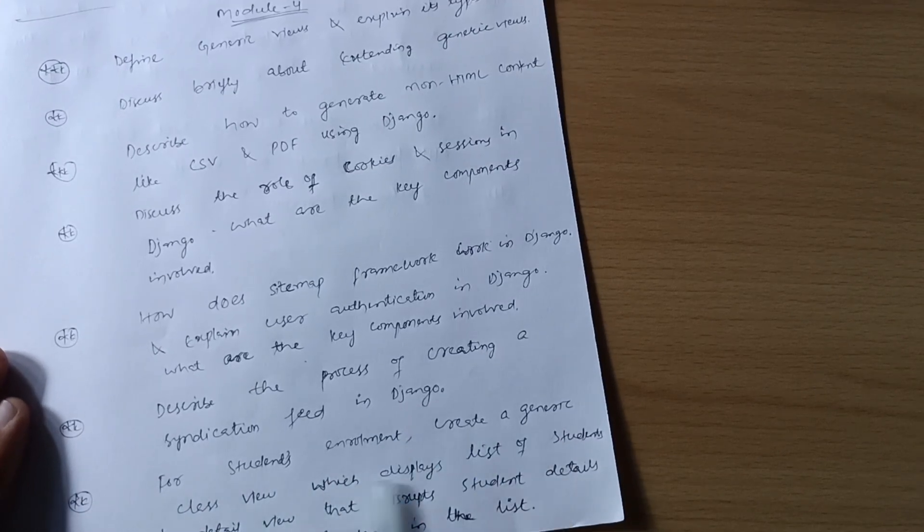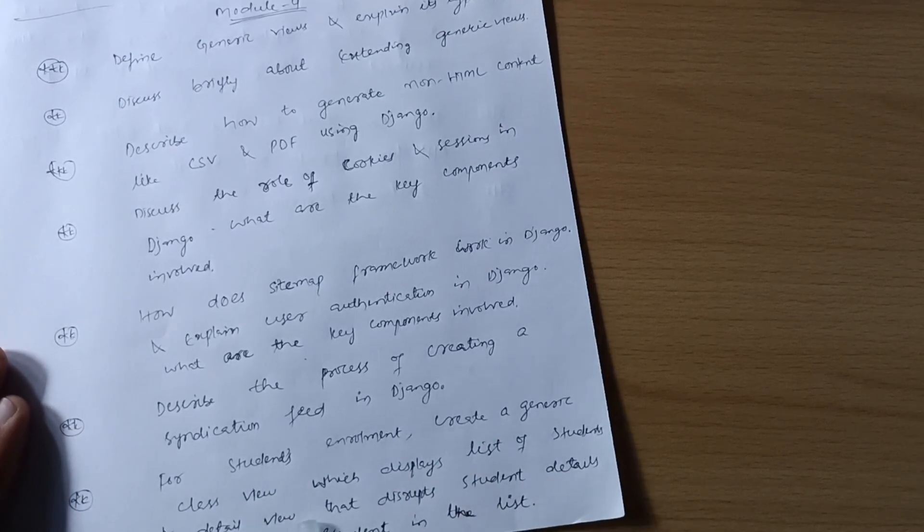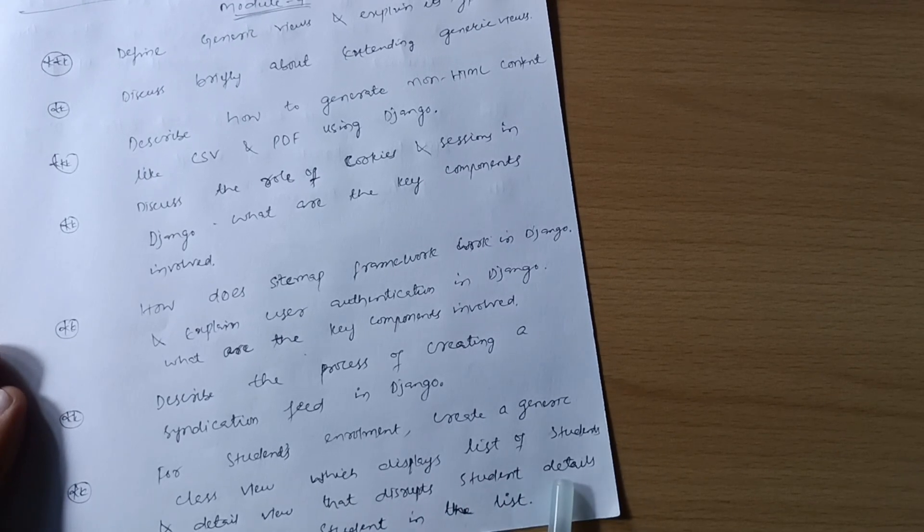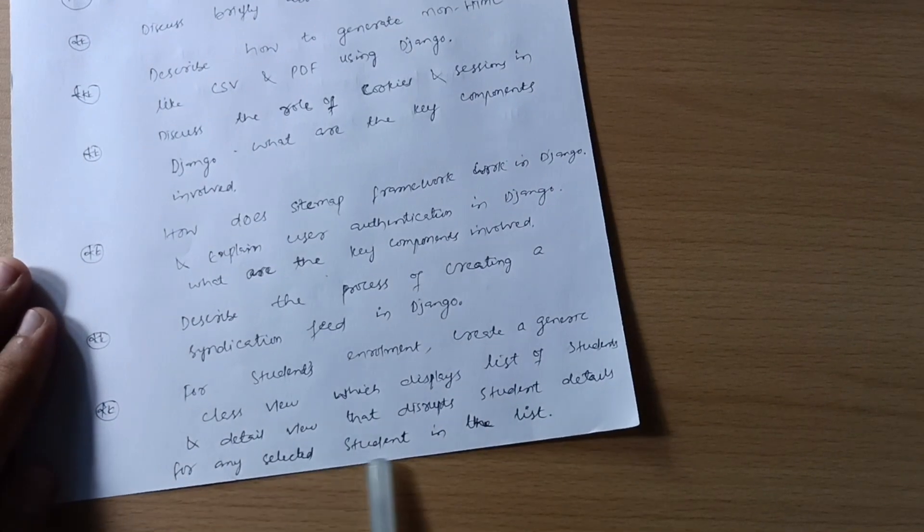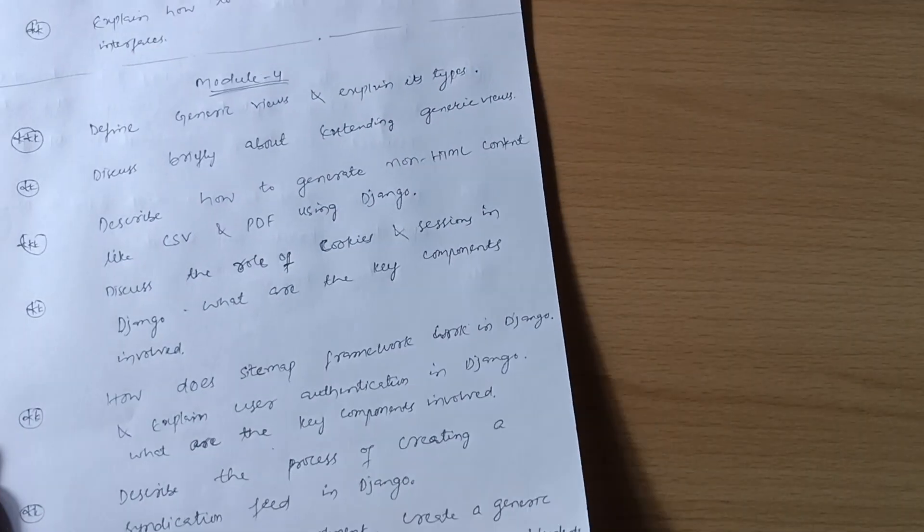For students enrollment, create a generic class view which displays list of students and detail view that displays student details for any selected student in the list. These are all questions from Module 4.